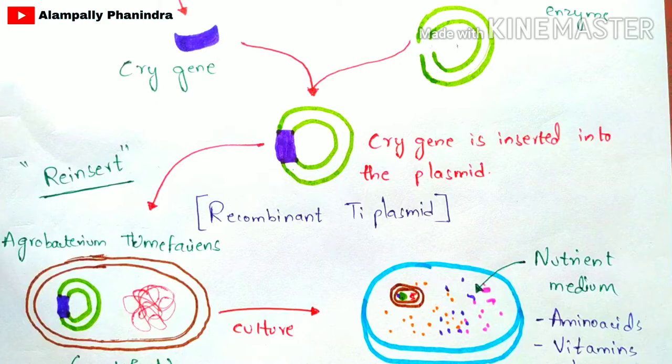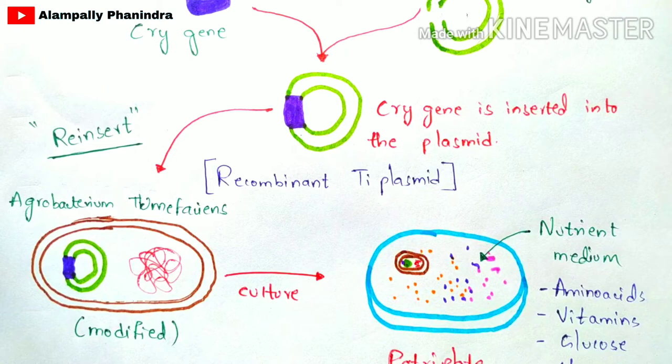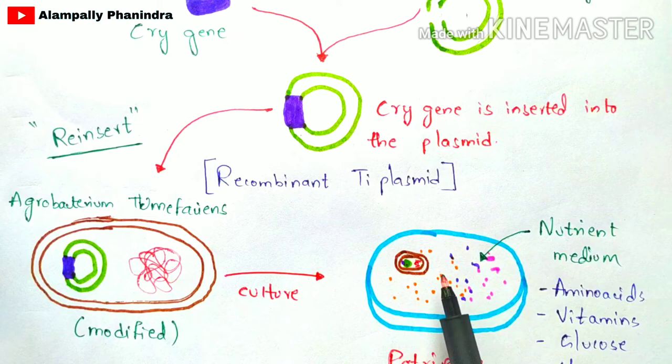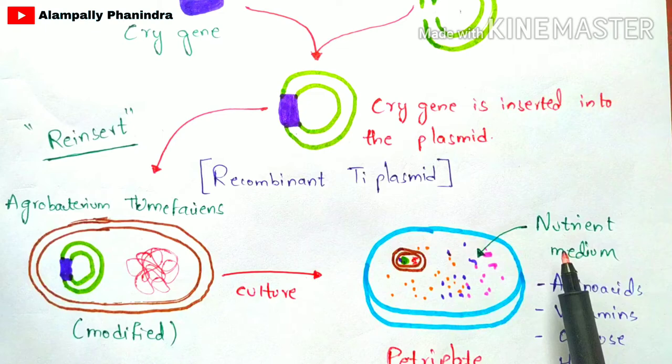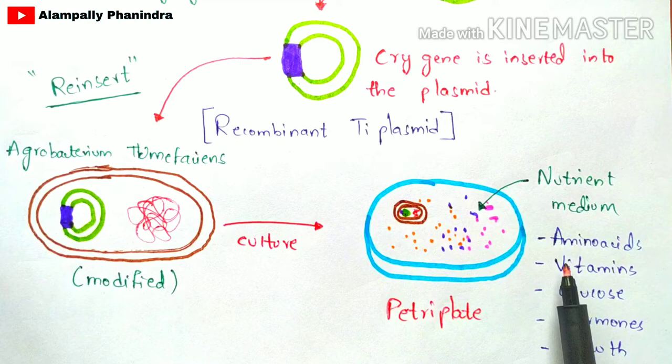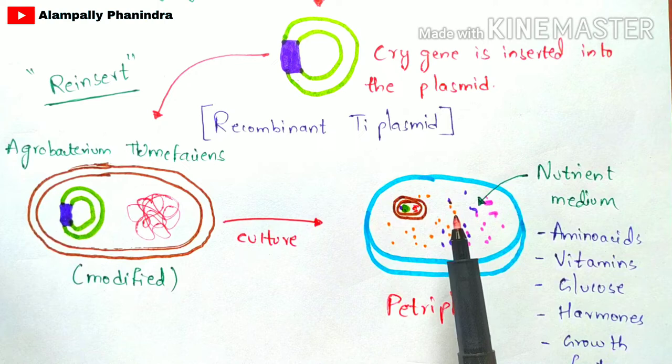Next, a petri plate is taken and this modified Agrobacterium tumefaciens bacterium is placed on the petri plate. A nutrient medium is then added to the petri plate, which includes amino acids, vitamins, glucose, hormones, and growth factors. This nutrient medium is supplied to the modified Agrobacterium tumefaciens primarily for bacterial cell division.